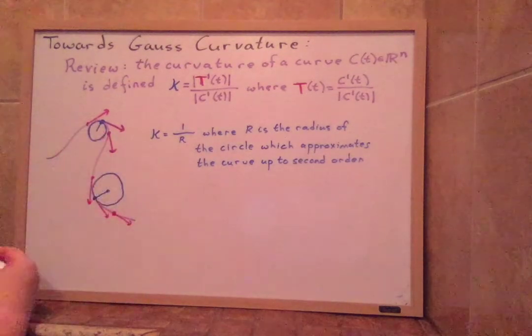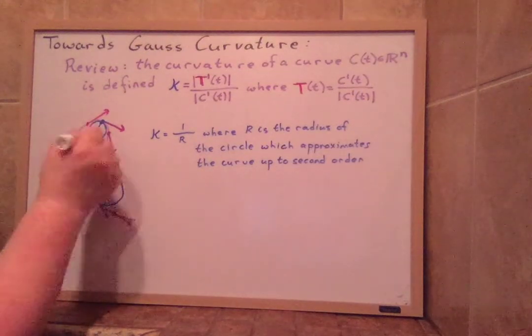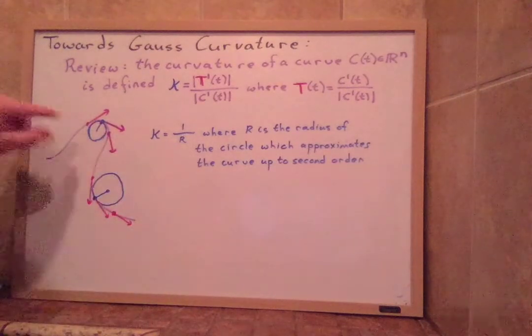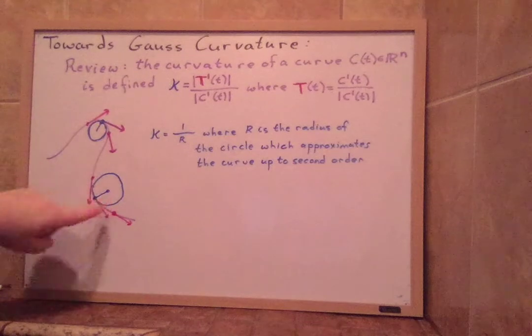So this is a circle which approximates the curve up to second order. So up to second derivatives, it's agreeing with the curve. And 1 over this radius is the curvature. So the curvature is very large where it bends very strongly, and it's smaller where it bends slowly.